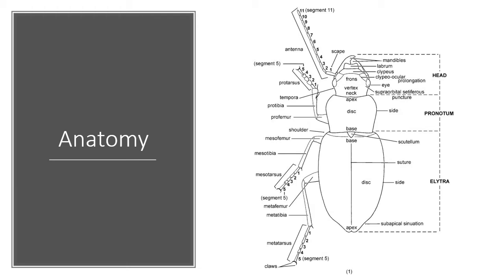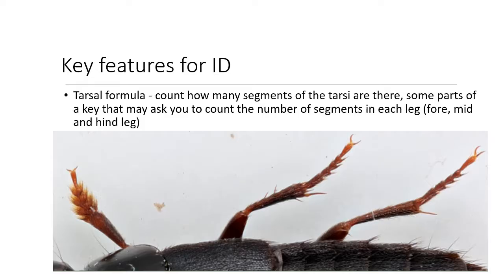The legs are made up of the coccyx, only seen from underneath, the femur, the tibia, and the tarsus. The tarsus is made up of small segments called tarsi. One of the key features for beetle ID is the tarsal formula, which refers to how many tarsi there are. Sometimes a dichotomous key, a tool used to identify insects, will ask you to count the number of segments in each leg. In this case, the tarsal formula of this beetle is 5-5-5, as each leg has five tarsi.